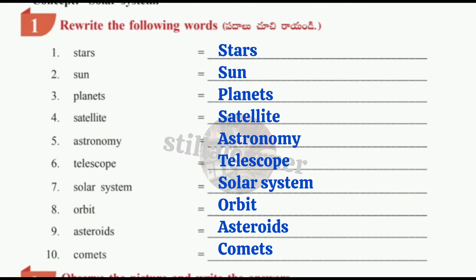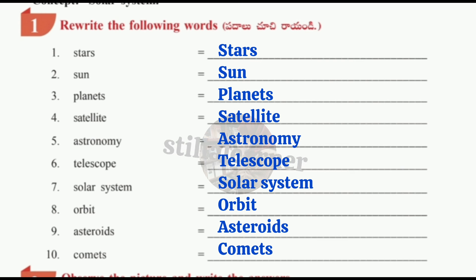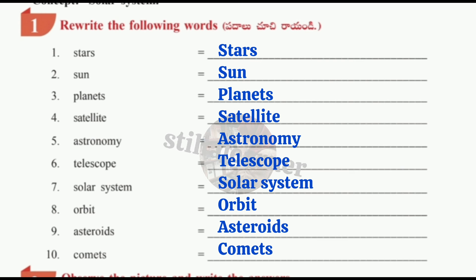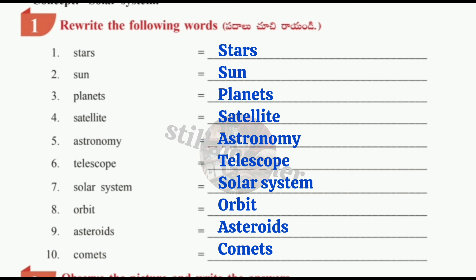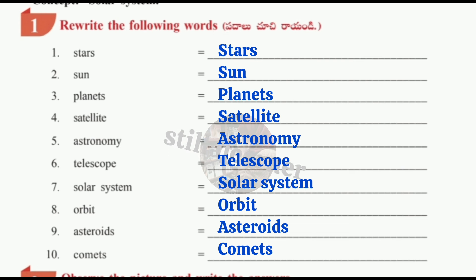Worksheet number seven: rewrite the following ten words — Stars, Sun, Planets, Satellite, Astronomy, Telescope, Solar System, Orbit, Asteroids, and Comets. Be careful while writing and don't miss any letter, or it will be incorrectly spelt.